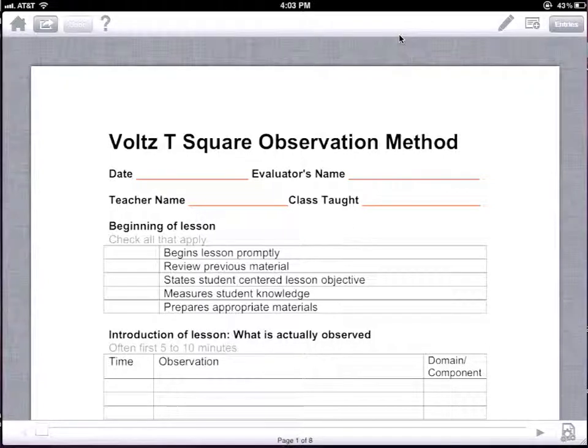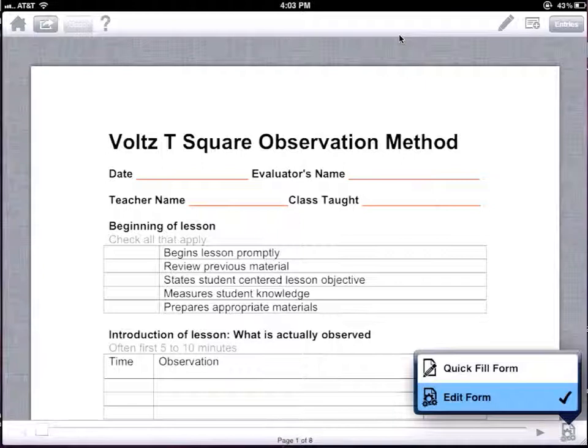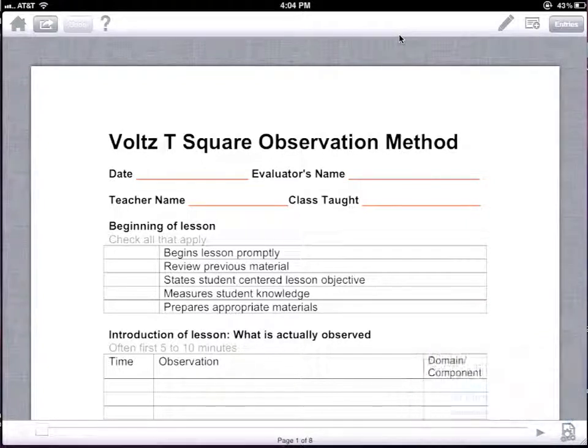Now I'm on my iPad, and in the lower right-hand corner, there's a gear with a piece of paper behind it. If I choose that, up will pop a box that says Edit Forms or Quick Fill Form. We're going to want to edit this form, and that's what's checked, so that is correct.